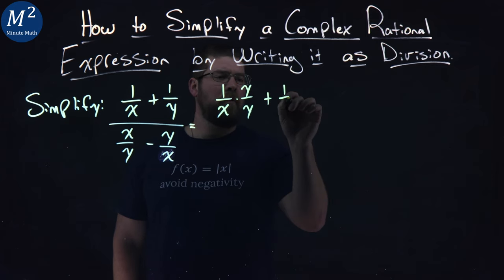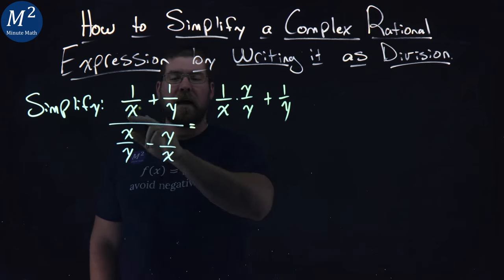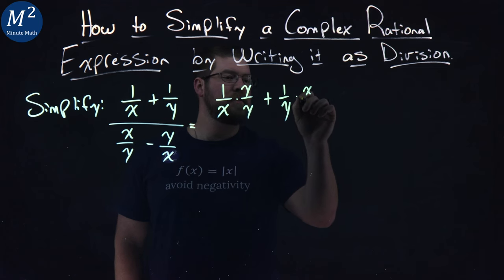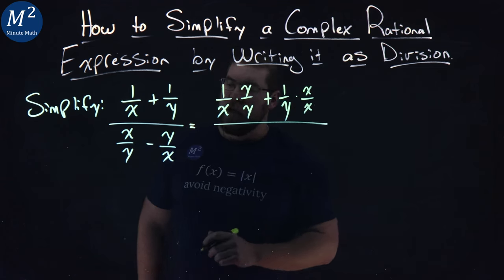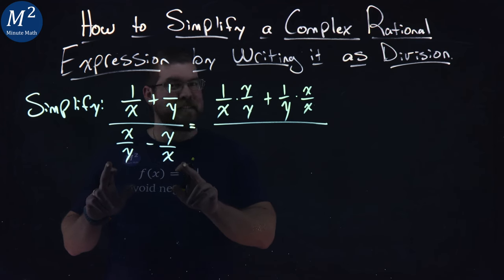Plus, we have 1 over y. I'm going to do the same thing with the x as a denominator, times x over x. Now, same thing down here with the second part.